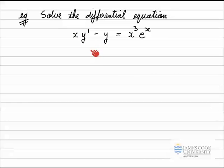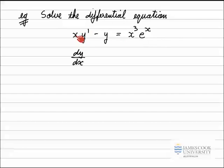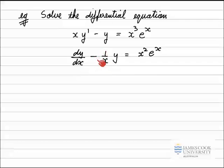We remember the method for first order linear DEs with an integrating factor, and the first thing to do is to put it into the standard form. So I'm going to rewrite y' as dy/dx and divide the whole equation by this x term here. So we'll have a 1/x multiplied by the y here, and dividing the right-hand side by x will give x squared e to the x. This is now in the standard form: dy/dx minus a function of x times y equals a function of x.